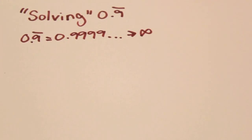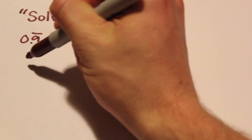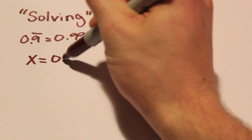0.9 repeated can be manipulated with the variable x just like any other number, so here we'll let x equal 0.9 repeated.